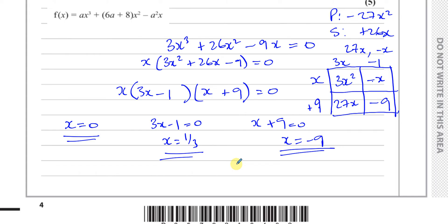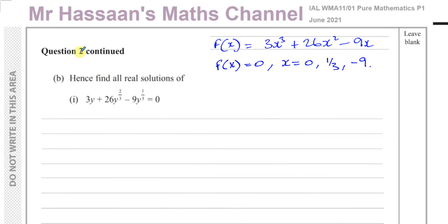Now for part B: hence find all real solutions of 3y + 26y^(2/3) − 9y^(1/3) = 0. This looks really complicated, but the key word is hence, which means use the answers to the previous part to answer this question. So I'm going to write down the equation we already solved — 3x³ + 26x² − 9x = 0 — and compare the two equations, where we can see a very clear connection.